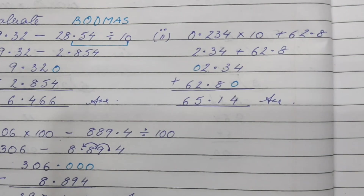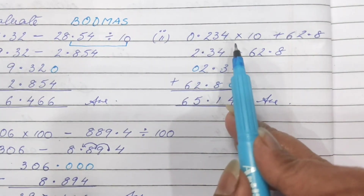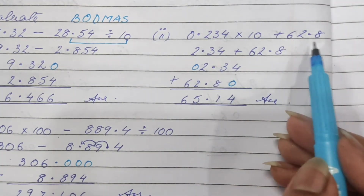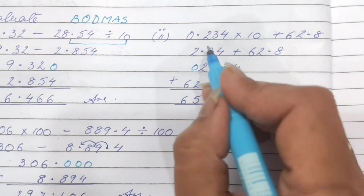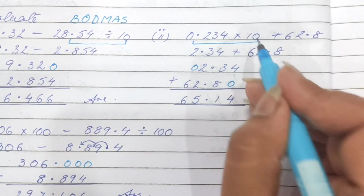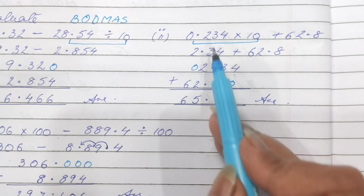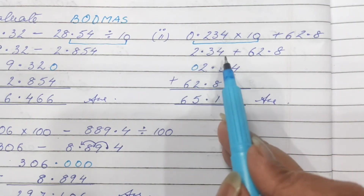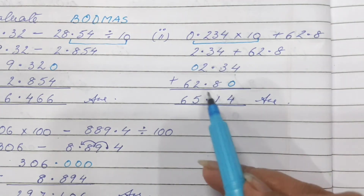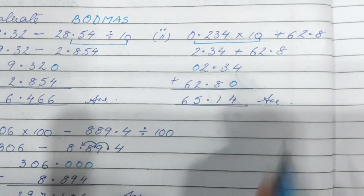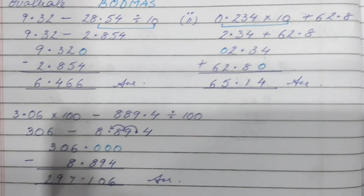Look at the second sub-part: 0.234 into 9 plus 62.8. First we solve the multiplication part — our decimal will shift one place in front, giving 2.34. Then we add 2.34 plus 62.8 by making them like decimal numbers.